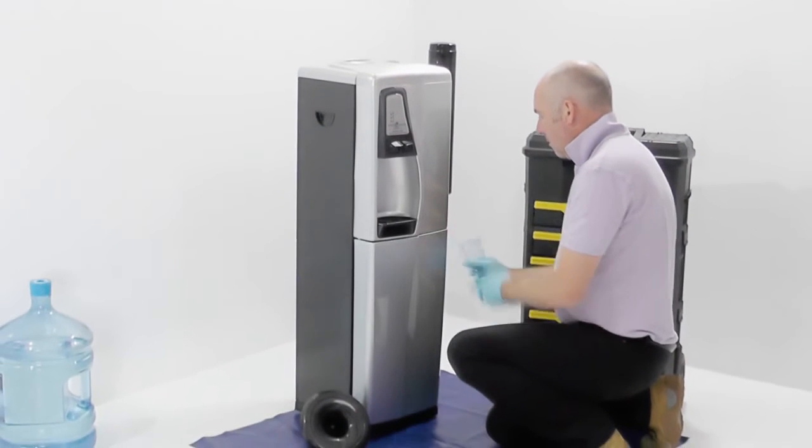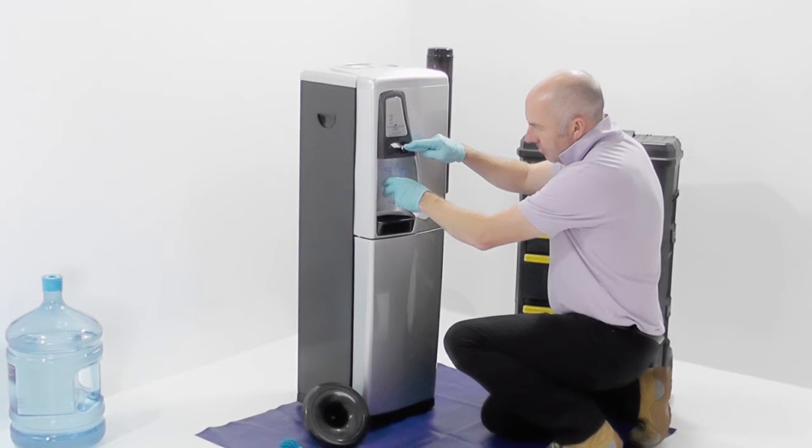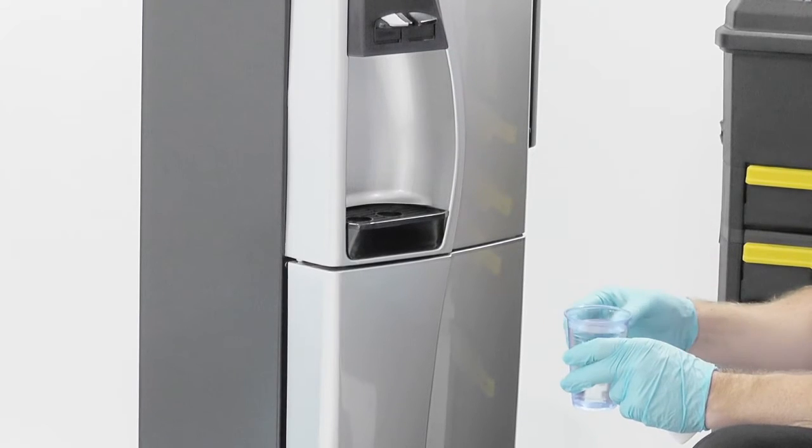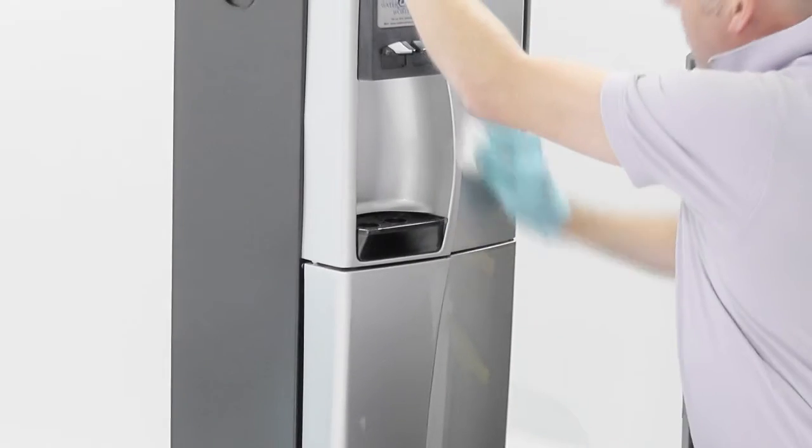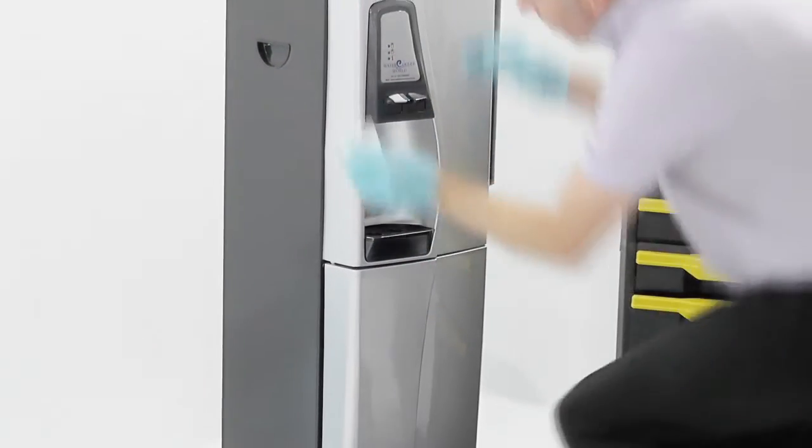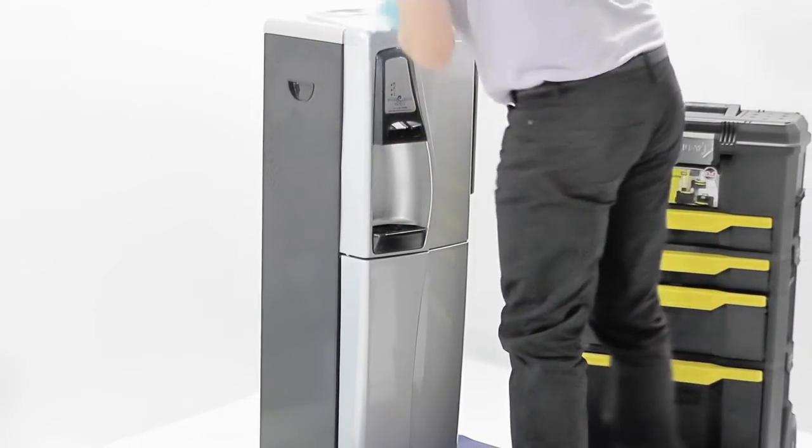We're going to take water from both taps. That should now ensure that there's peroxide solution getting through all the tubes. And we'll take a Miraclean sponge and just give the machine a good clean.